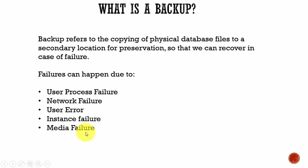Next, media failure. This can happen due to the failure of a disk drive, or failure of a disk controller, or the data files or some other important database files might be corrupted. In this case, we have to restore the files from the backup — go to the backup location, restore the files to the database server, and then recover the database. Like this, different kinds of failures can happen on a database, and depending upon the failure, a DBA intervention might or might not be needed.